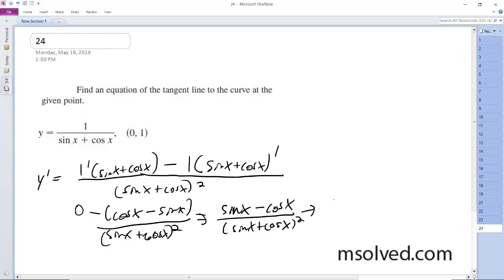So sine of 0 is equal to 0 and then cosine of 0 is equal to 1. And then 0 plus 1 squared is equal to 1. So we get negative 1 over 1, which is negative 1.